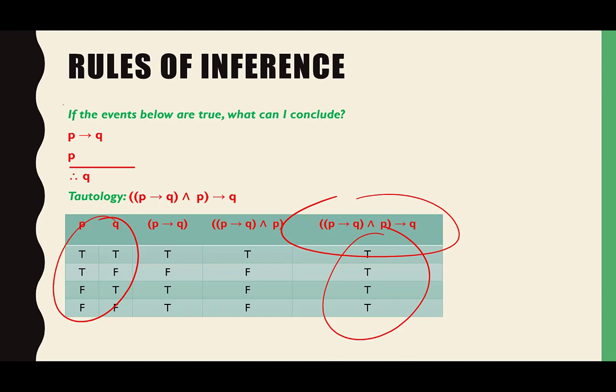Every one of these is a rule of inference. This one is actually called modus ponens, and every single rule of inference will have a tautology that goes along for the ride.